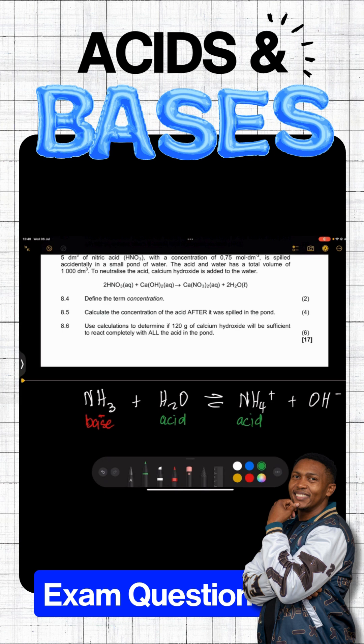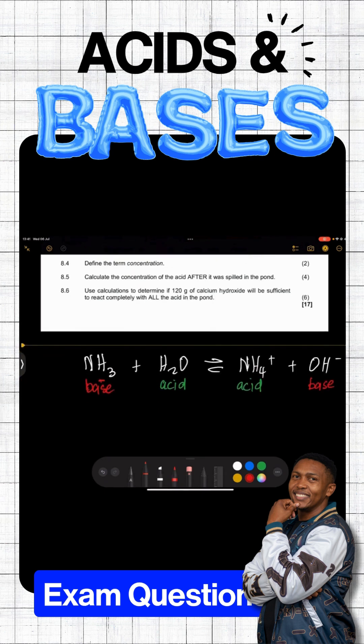And obviously, if that is an acid, that guy must be the base. Now, when they say to identify the acid-base conjugate pairs, what I was trying to show you earlier on is that, look at this. You just simply take the base on the other side. You pair it with an acid on the other side. So, this base pairs with that acid. This acid pairs with that base.